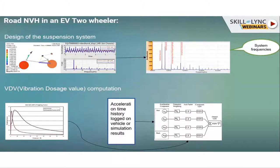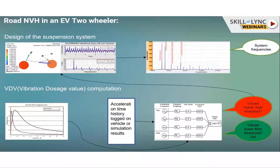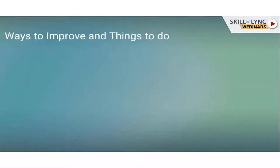VDV is a fourth-order integral of the acceleration value. If the computed values are lower than a particular threshold set internally by the company, the design is okay. If not, I go back to the simulation model and start tuning suspension values, vehicle weight, or vehicle architecture if needed. This is a loop that keeps going. Once the VDV agreed upon internally is okay, we move ahead and say that the design is ready to improve further.